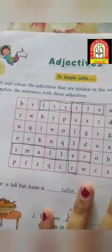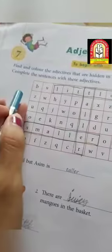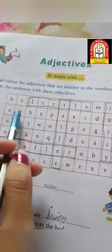So what are adjectives? First, before starting the chapter we are going to do some exercise. Find and colour the adjectives that are hidden in the word search. Complete the sentences with these adjectives. So first we are going to solve this table. We are going to search some adjectives from this table.